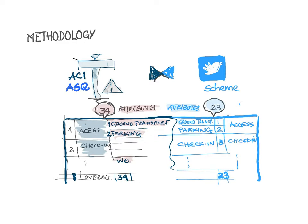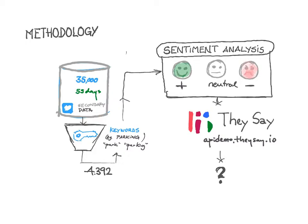Taking into account the ACI ASQ scheme with its number of processes and 34 attributes in particular, we tried to look at these from a Twitter point of view in order to match them. We used that as a reference and tried to replicate it as much as possible. In this replication process, we used keywords to allocate each tweet into the right processes and attributes, and found up to 4,300 relevant tweets — around 10% of the total.